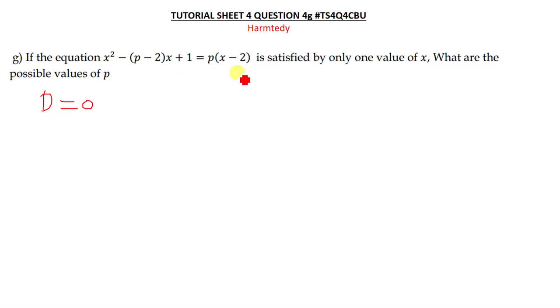So if it's only satisfied by one value of x, you can use this formula which is the discriminant is equal to 0, meaning our b squared minus 4ac should be equal to 0.